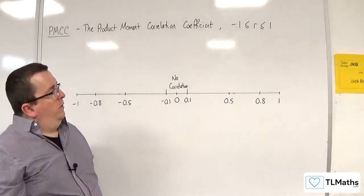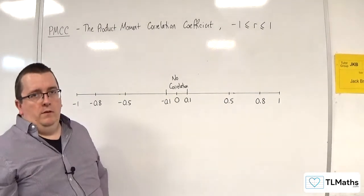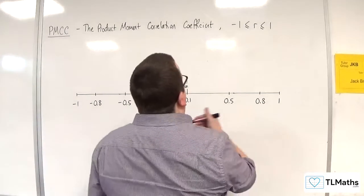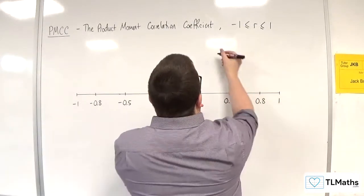Now, if you are above 0.1 up to 1, then we refer to this as positive correlation.